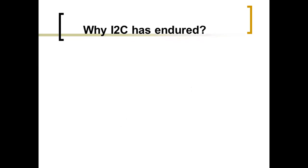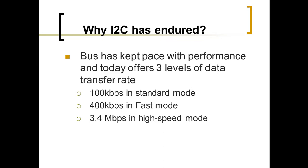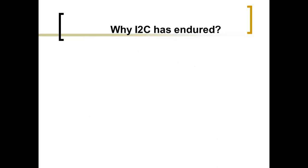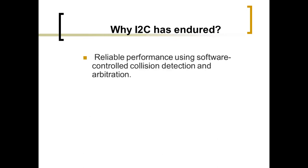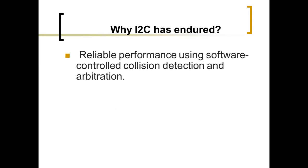Why I²C has endured: the bus has taken pace with performance and today offers three levels of data transfer rates — 100 kbps, 400 kbps, and 3.4 Mbps in high-speed mode. It also provides reliable performance using software-controlled collision detection and arbitration.